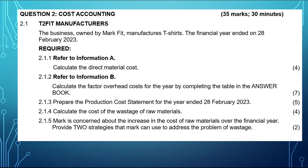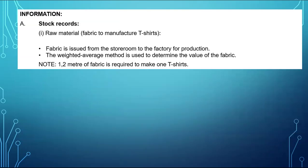We are required to refer to information A to calculate the direct material cost. So this is information A — we have stock records for raw material, which is fabric, for manufacturing issues. Fabric is issued from the storeroom to the factory for production. The weighted average method is used to determine the value of the fabric. We need to know that 1.2 meters of fabric is required to make one T-shirt.